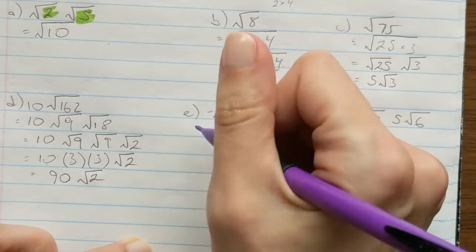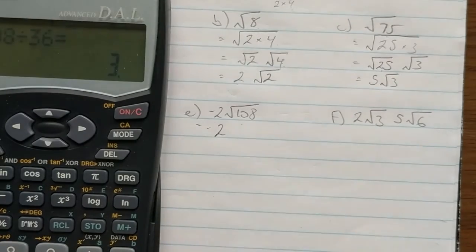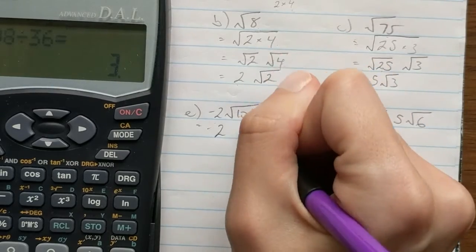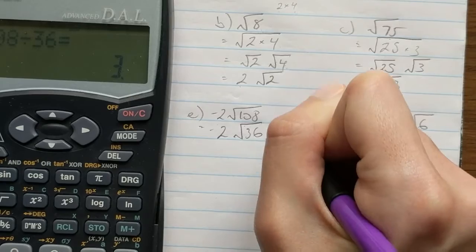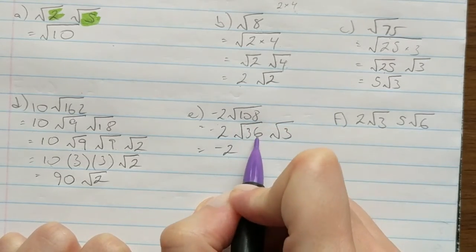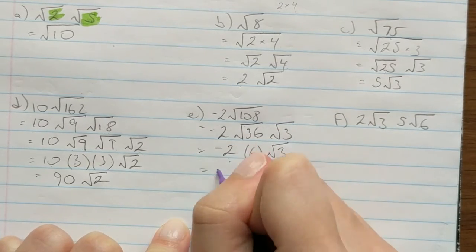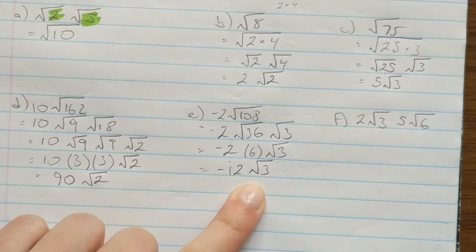Next example: -2 × √108. Using a calculator, I try dividing 108 by 81 — no. By 64 — no. By 49 — no. By 36 — yes! 108 ÷ 36 = 3. So instead of √108, I write √36 × √3. The square root of 36 is 6, so this becomes -2 × 6 × √3 = -12√3.